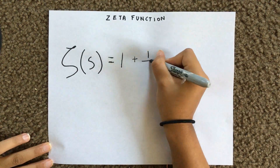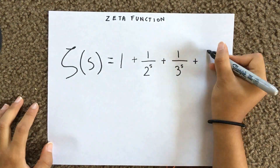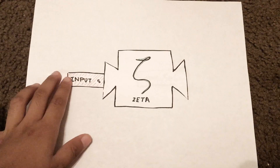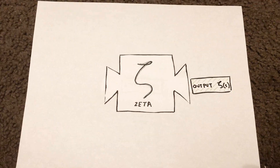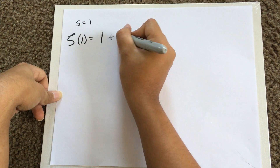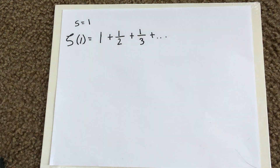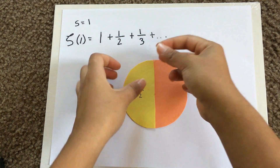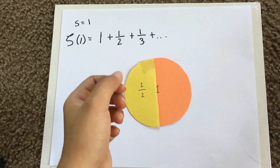This is the zeta function: 1 plus 1 over 2 to the s, plus 1 over 3 to the s, and so on. Like any other function, you can plug values into it. When s equals 1, it becomes the harmonic series — 1 plus a half plus a third and so on — which is known to diverge, or basically add up to infinity.